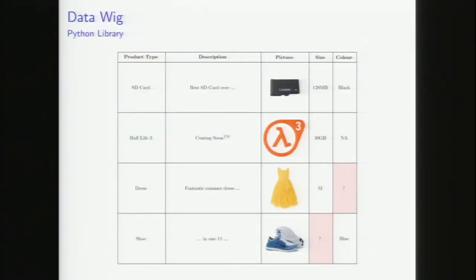For datasets with lots of images and text, I'd recommend using DataWig — a Python library developed by AWS, built on top of MXNet. That gives it access to powerful deep learning functionality. For example, if we have a product dataset with an SD card, a description, a picture, its size, and color, but we don't know what color a dress is, we can feed the description, picture, and other features into a neural network and it'll say that dress is yellow. Or if we don't know what size shoes are, but the description tells us, we can use RNNs and CNNs to get really powerful imputations.